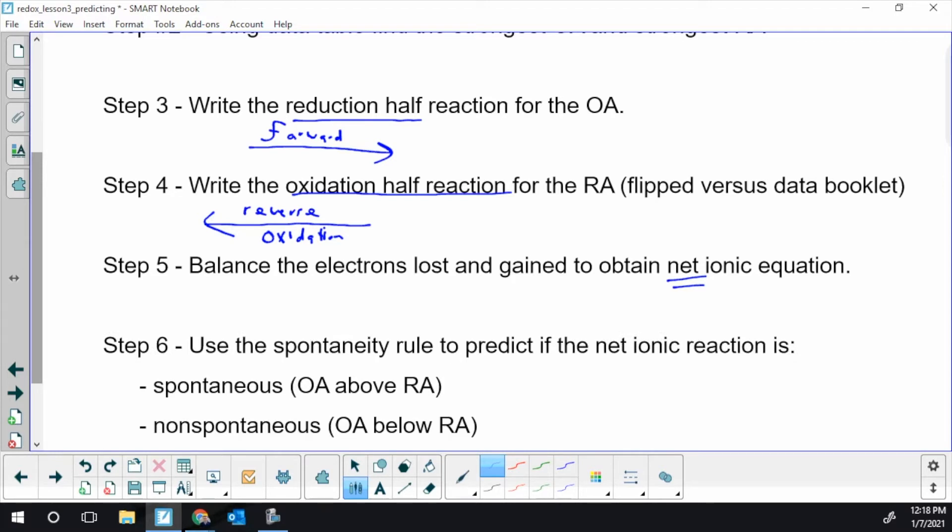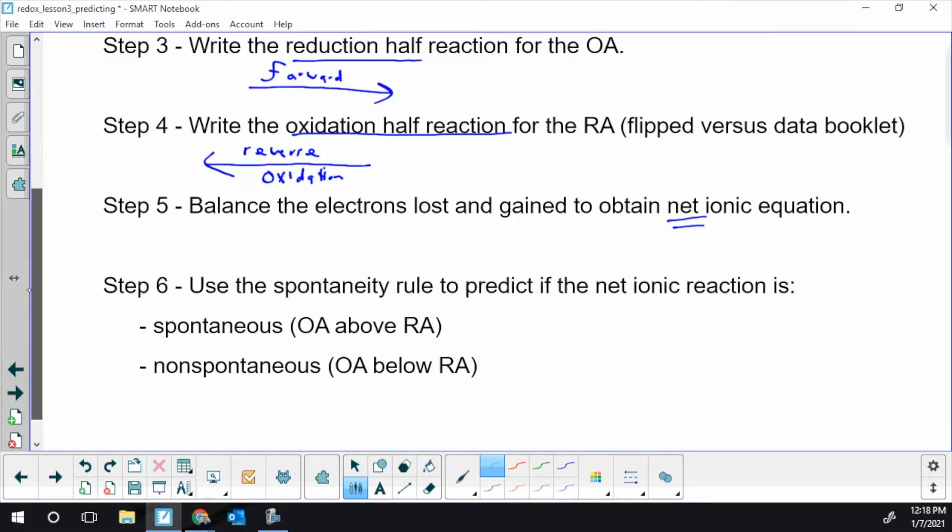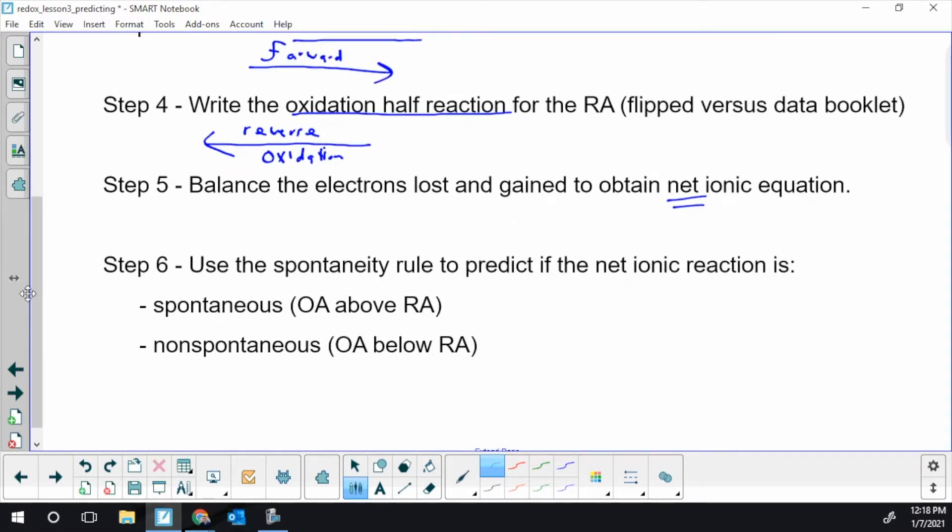Last, kind of just like we did in acid and base, we would have made a prediction based on the position of the table. We're going to do the same here. We're going to use the spontaneity rule that we learned about yesterday. We're going to be able to identify the reaction we wrote in step five as spontaneous, which means it does occur on its own. Think of spontaneous as going downhill. You don't have to do anything for something to go downhill.